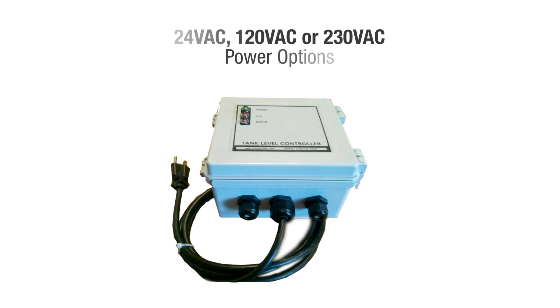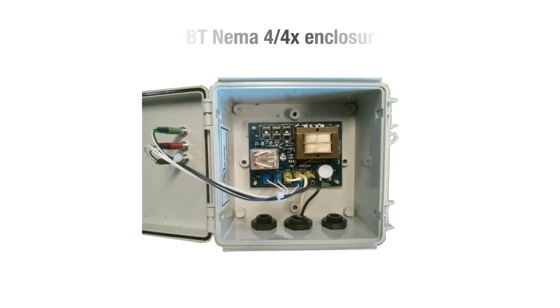It has hook up options for drain or fill applications and is available in several power options. This relay is housed in a wall mount enclosure and comes with a six foot power cord, LED indicator lights, and two openings in the bottom for easy wiring.